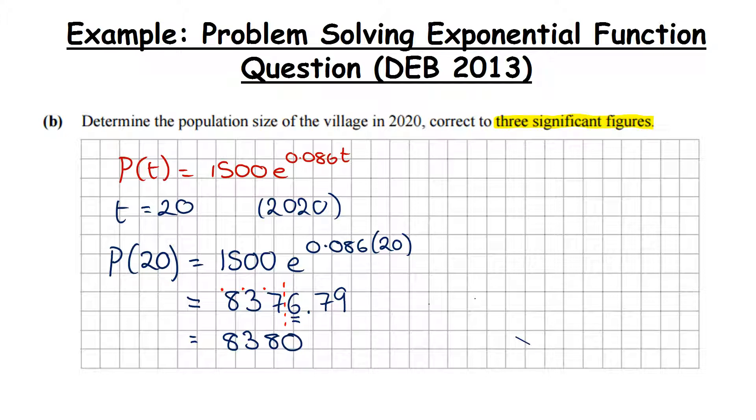So do be careful. It does not mean the same thing as three decimal places. Three significant figures means three non-zero numbers. They may appear before the decimal place like they do here, or they may appear after the decimal place. It really depends on the question. Please do watch out for that.